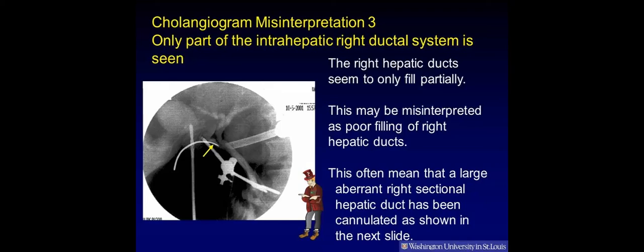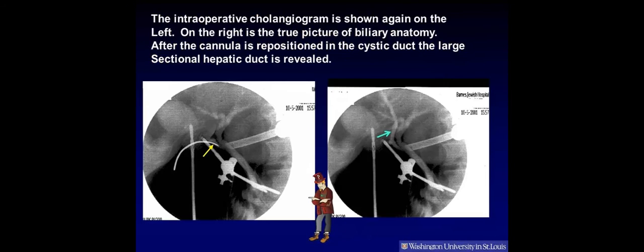Cholangiogram misinterpretation 3: Only part of the intrahepatic right ductal system is seen. In this cholangiogram, the right hepatic ducts seem to fill only partially. This may be misinterpreted as poor filling of right hepatic ducts. However, it often means that a large aberrant right sectional duct has been cannulated. After the cannula is repositioned in the cystic duct, the large sectional hepatic duct is revealed as shown by the blue arrow. Here is a close-up of the same cholangiogram.